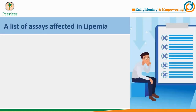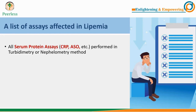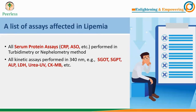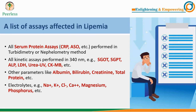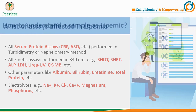As a summary, all serum protein assays such as RA, ASO, and CRP performed by turbidimetry and nephelometry, and all kinetic assays at 340 nanometers — such as SGOT, SGPT, ALP, LDH, urea, CKMB — are affected. Other parameters like albumin, bilirubin, creatinine, and total protein are also affected. Electrolytes including sodium, potassium, chloride, calcium, magnesium, and phosphorus are affected by the use of lipemic samples.